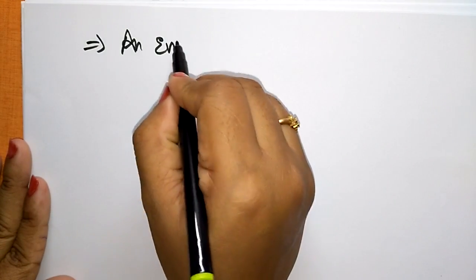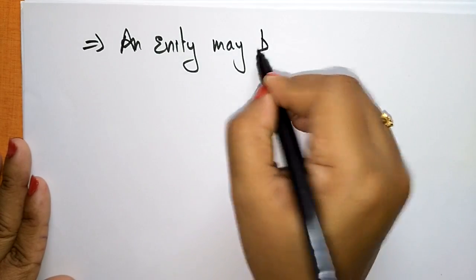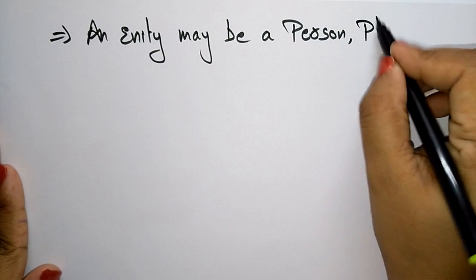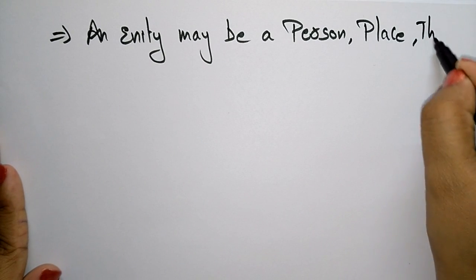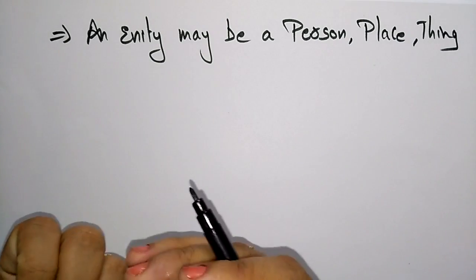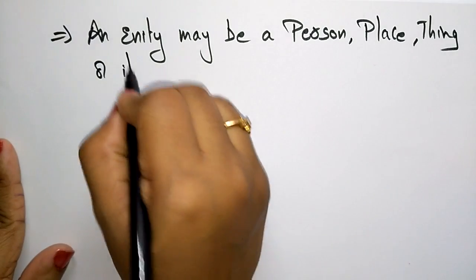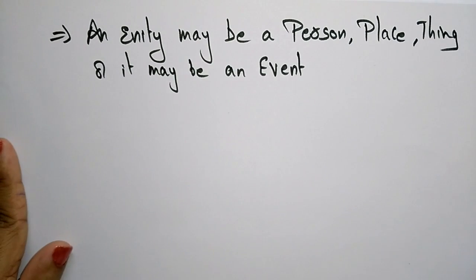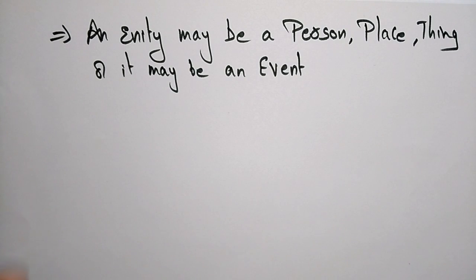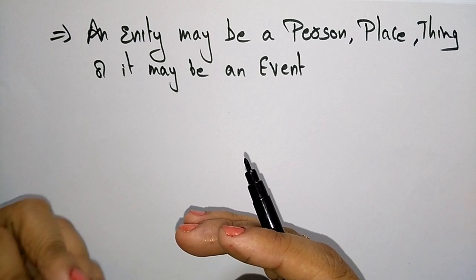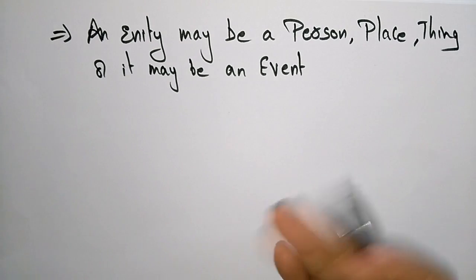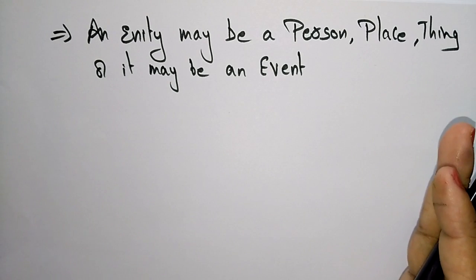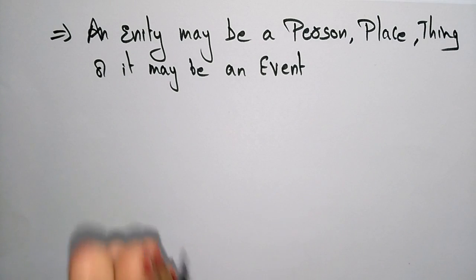An entity may be a person, a place, or a thing. It may also be an event — not only a single person, place, or thing. Sometimes it can be an event, like a sales period, a month, or a machine breakdown — some action that has been performed. A relationship is used to describe the interaction among entities.